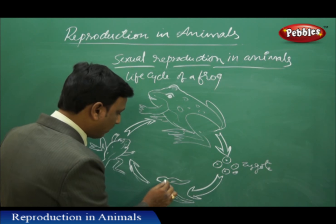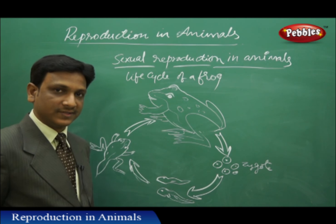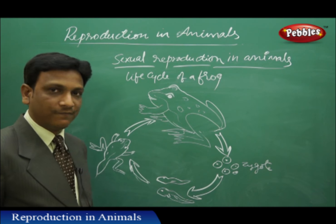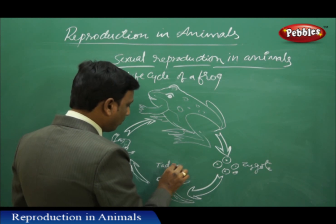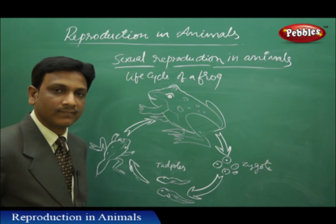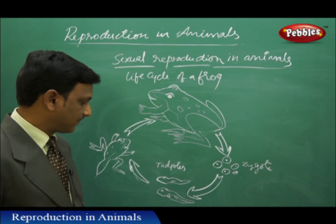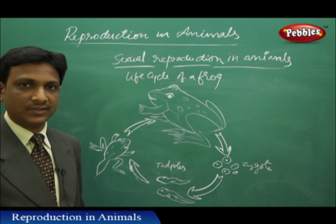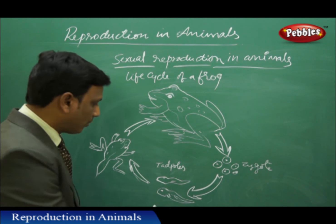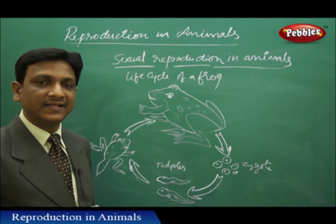Let us look at these small babies. They are not at all looking like frogs — they are looking just like small fish. We call them tadpoles. They have a fish-like appearance, and not only the appearance, they also have gill structures. They swim and breathe with the gills.